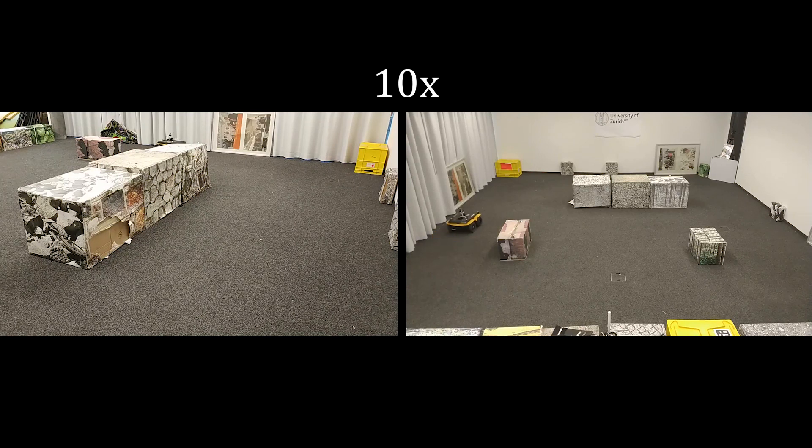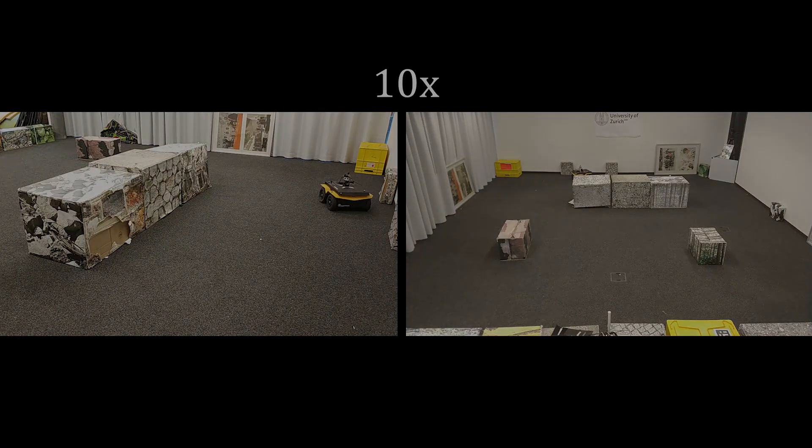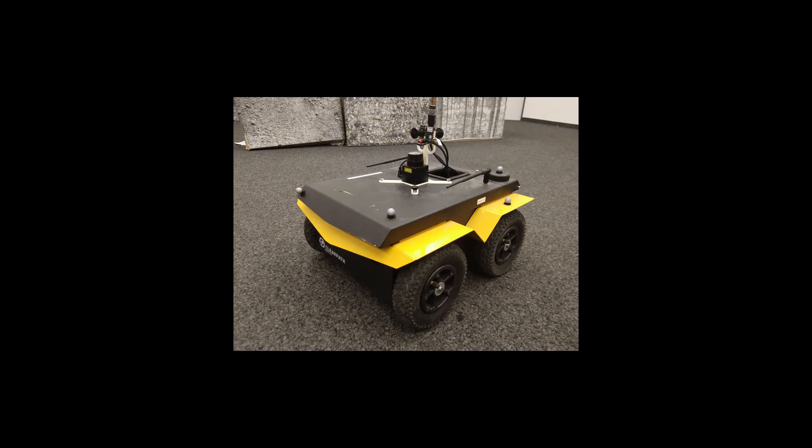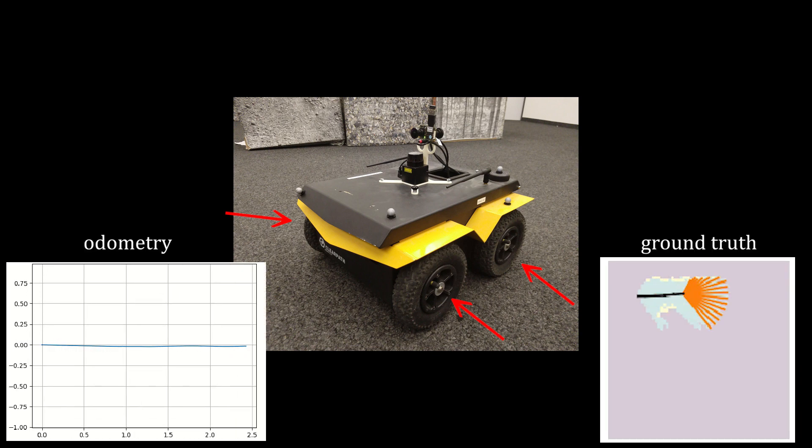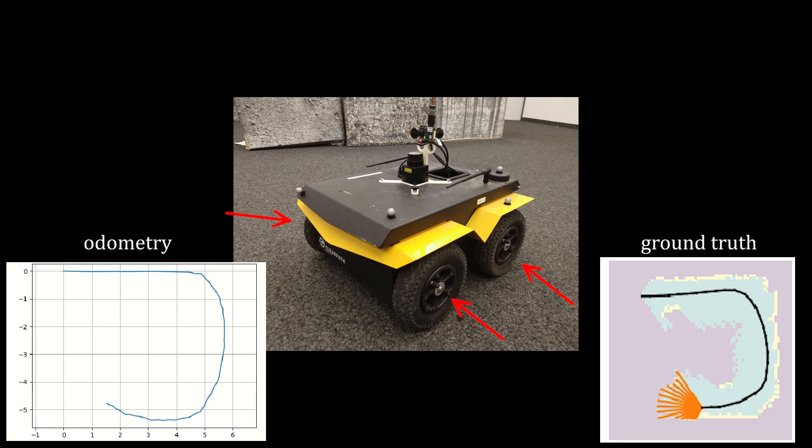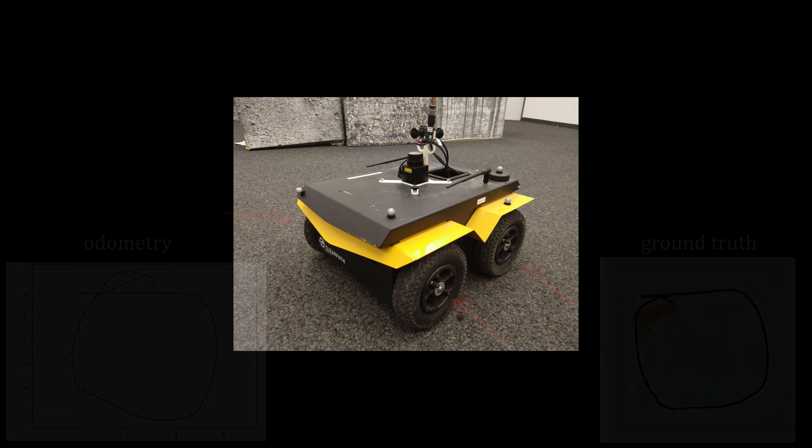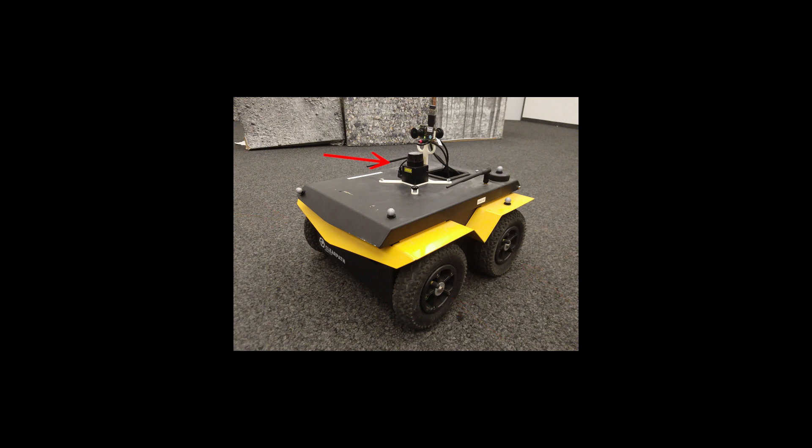We also validated our approach in a real-world scenario. We use a ClearPath Jackal for our experiments. The odometry provided by ClearPath is used as state estimate. We intentionally do not use the best available odometry to induce drift in our small experimental space. As depth sensor, we use a HOKUYO laser scanner.